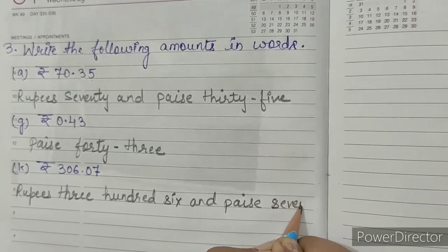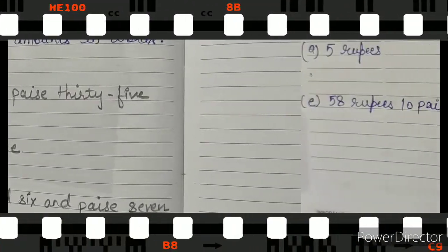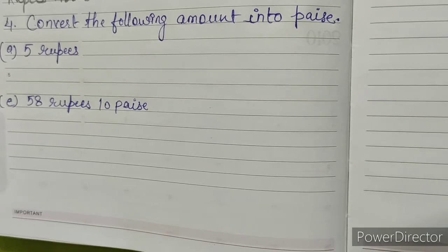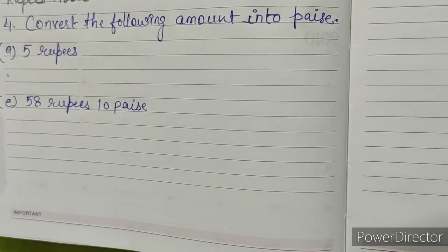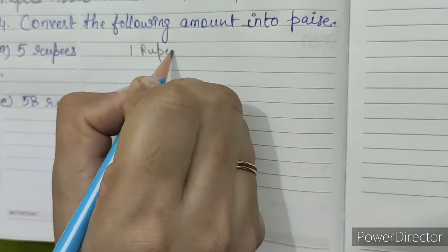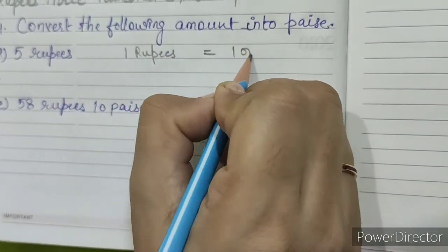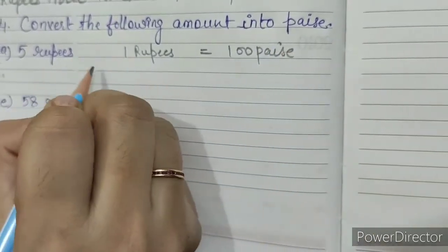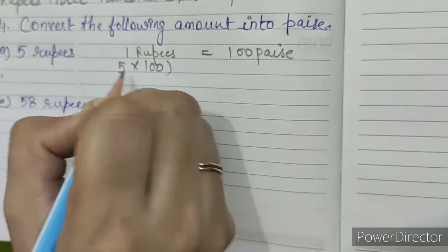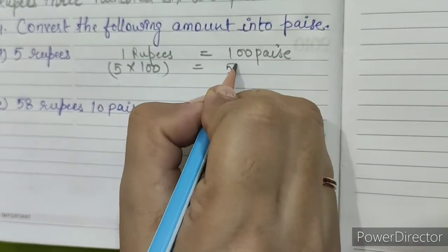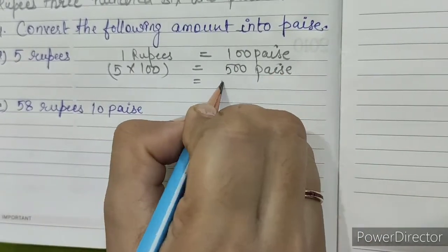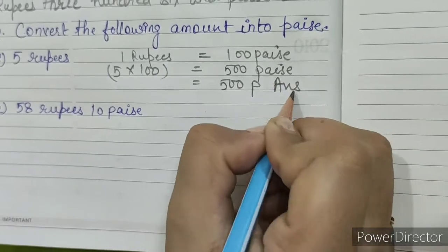Question number 4: convert the following amount into paise. A. 5 rupees. As we know, 1 rupee equals 100 paise. So 5 × 100 equals 500 paise. This is our answer.